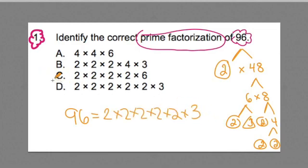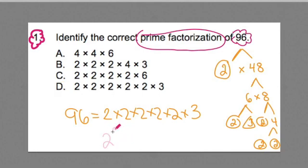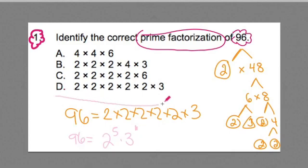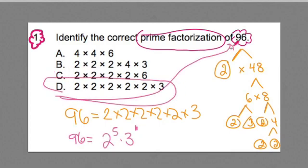The answer here would be D. Another way to express the prime factorization of 96 would be to write 2 to the 5th power times 3 to the 1st power. Both of those are different ways you could express the prime factorization of 96, and this helps us get to the answer.